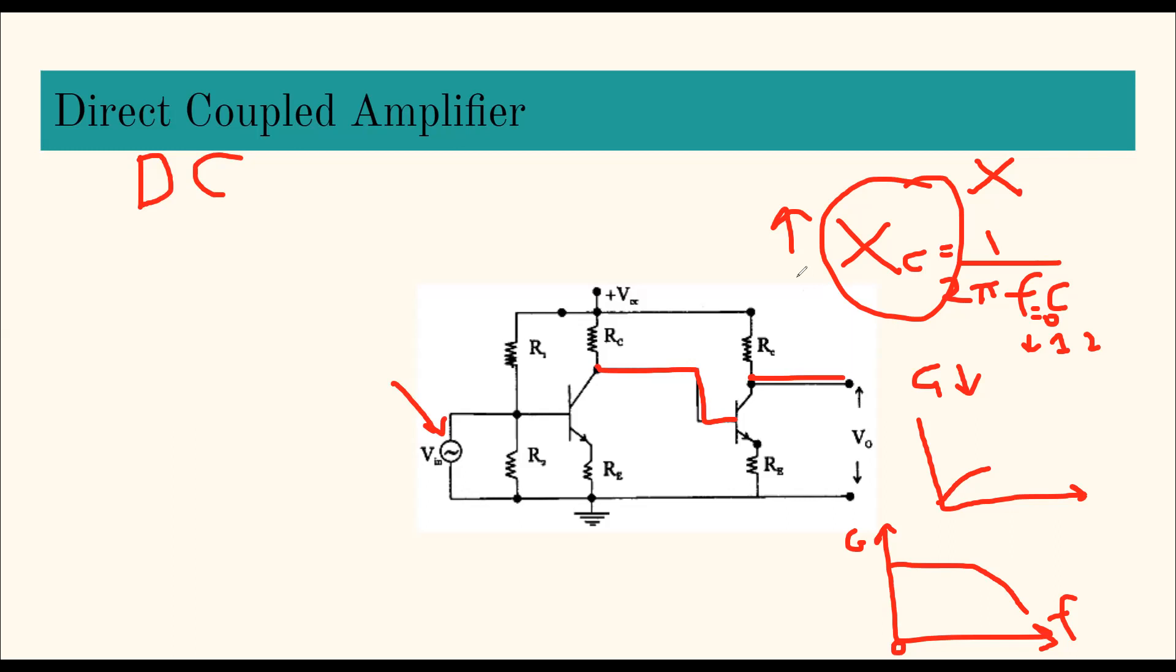It is coupled directly without using any reactive components like capacitors, inductors, transformers - nothing. That means the frequency response is independent of frequency. It is not direct current amplifier, it is DC direct coupled amplifier. It can be used for both DC and AC signals. What is the advantage? Low frequency gives good gains. It is inexpensive, it can be used to amplify DC signals, and it provides uniform frequency response.